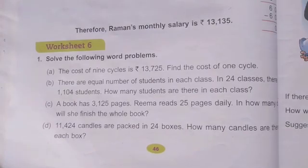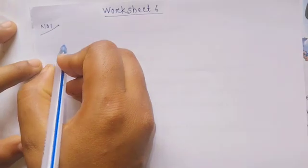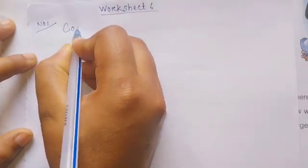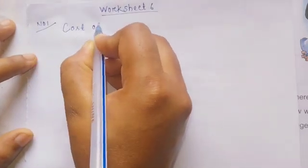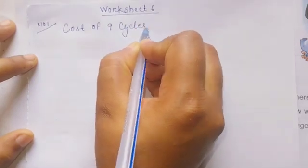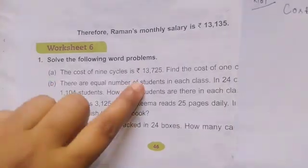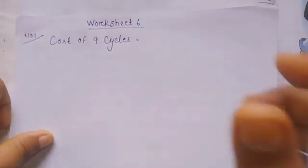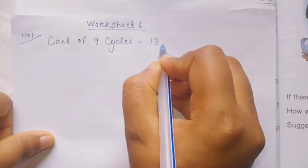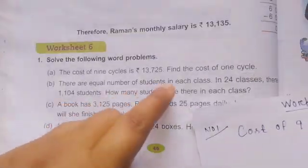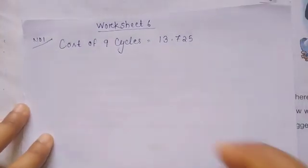First we write: Cost of 9 cycles equals 13,725. Then cost of 1 cycle equals...